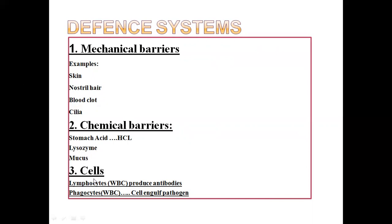Cellular defense involves different cells in your body, like lymphocytes and phagocytes, which are types of white blood cells. Lymphocytes produce glycoprotein molecules called antibodies, which protect you from pathogens — they can bind with a pathogen and stop its movement and entry into cells. Phagocytes engulf the pathogen in a process called phagocytosis.